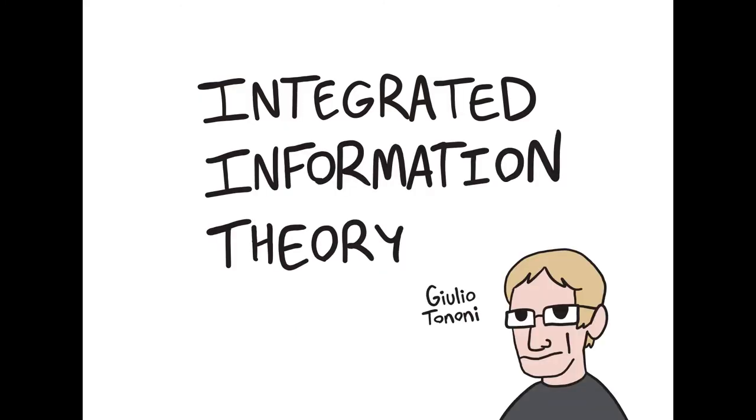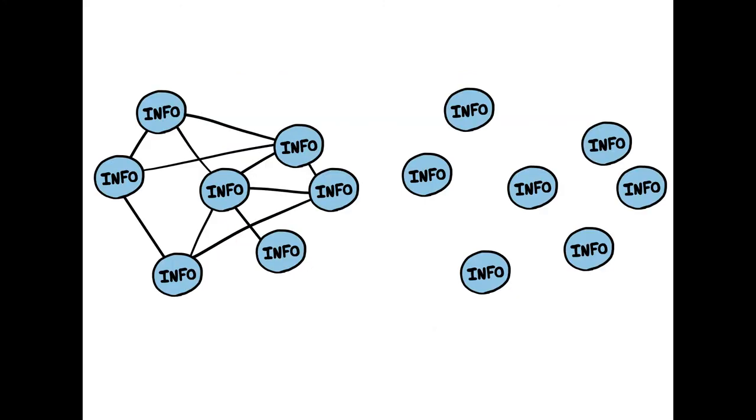Integrated information theory, proposed by neuroscientist Giulio Tononi, is one of the leading scientific and mathematical frameworks to explain consciousness. Integrated information theory postulates that a system that integrates information while processing it is more likely to be conscious. Dr. Tononi claims that a system that processes distributed information together is conscious, while information that is processed in isolation is not conscious. Unifying information leads to experience. Fragmenting information does not.